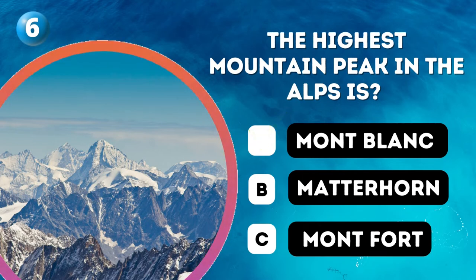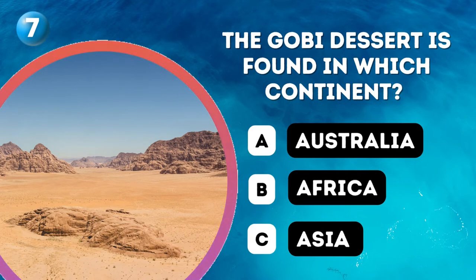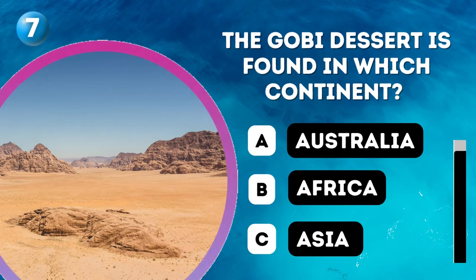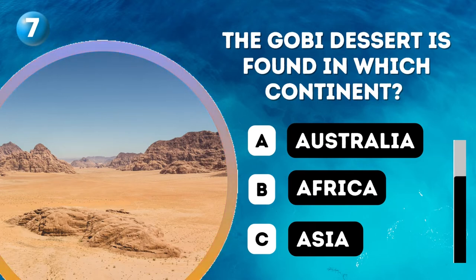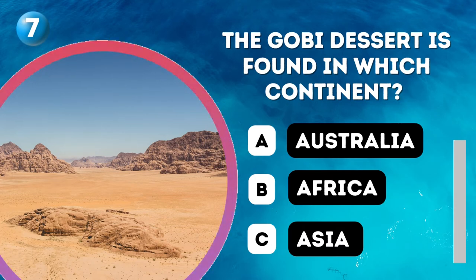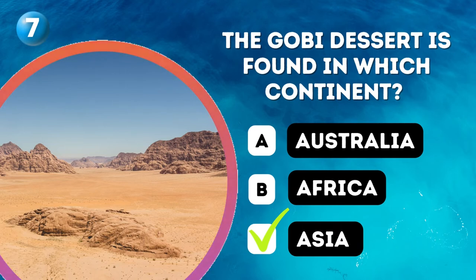Question 7. The Gobi Desert is found in which continent? A. Australia, B. Africa, C. Asia. Answer: Asia.